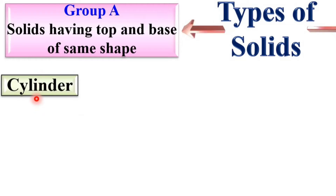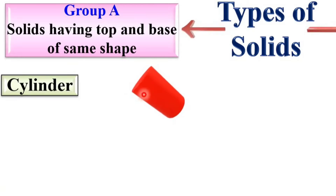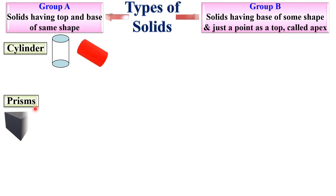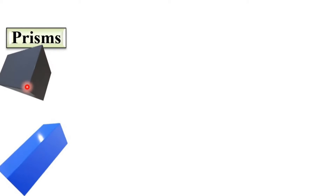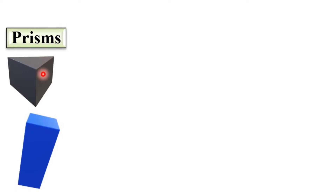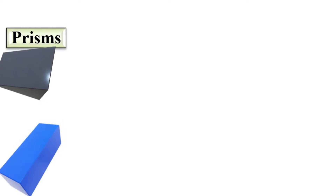For Group A, consider the cylinder — you can see it has a top and base of the same shape, which is the circle. Both top and bottom are the same circle. Next is the prism. For a prism, top and bottom are the same shape. If that shape is a polygon, it is considered a prism; if it is a circle, it is considered a cylinder.